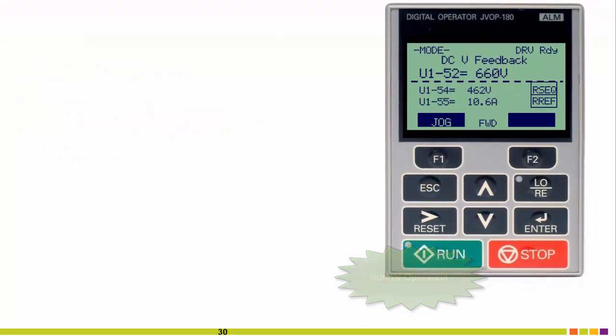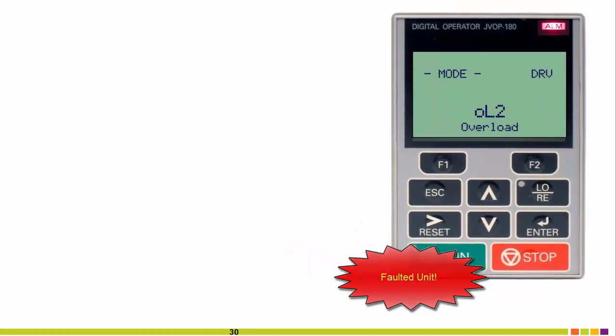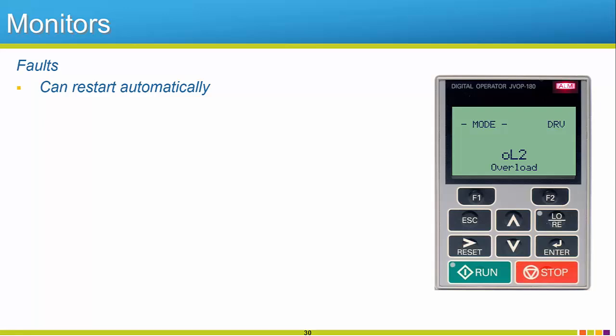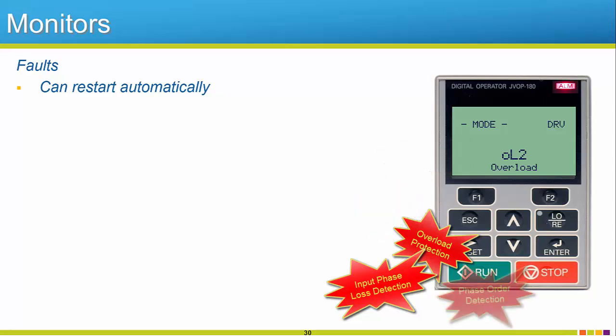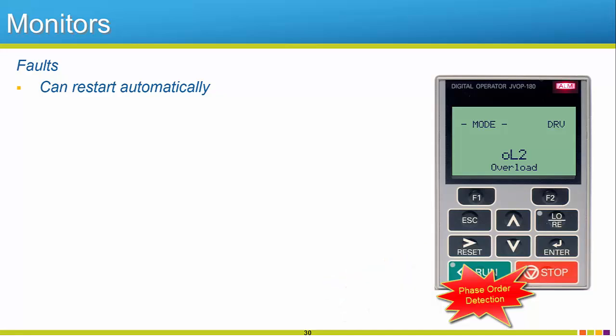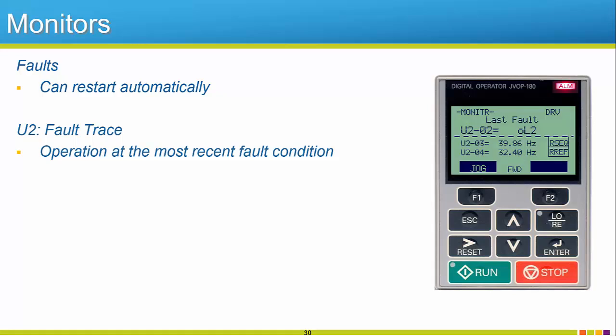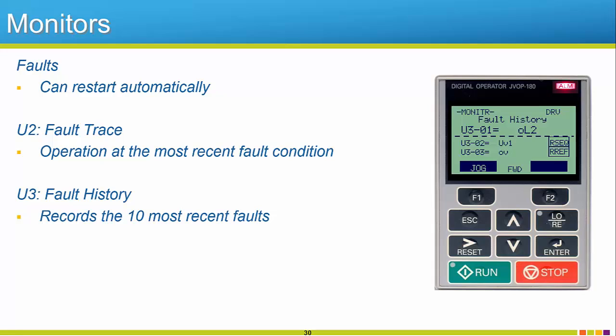If a fault were to ever occur on the R1000, we've got you covered. The unit can be set up to automatically restart on a fault if desired. There are also a number of faults ingrained into the R1000's programming to protect the unit and your application. To name a few, there is a power supply over voltage and also under voltage detection, over current protection, overload, input phase loss, and also phase order detection. There are also two monitor groups solely dedicated to helping the operator troubleshoot any fault. The U2 monitor group will list what occurred at the most recent fault. Think of it kind of like a snapshot that was taken during a fault to list all of the monitors you will need to make an analysis of what exactly happened. Secondly, the U3 group is your fault history group. This will list up to ten of the most recent faults. This is great for tracking previous faults and also checking for patterns.